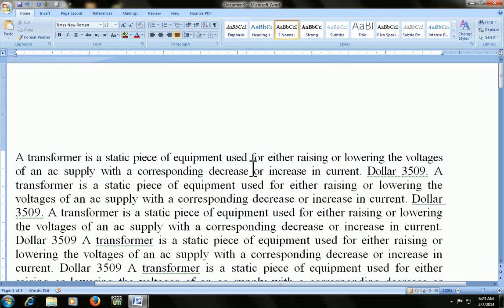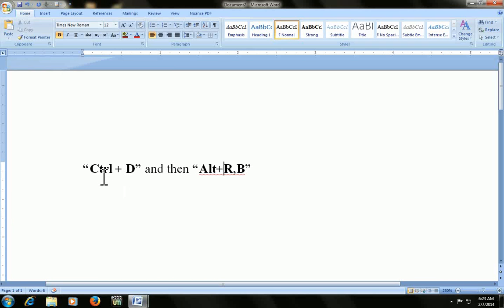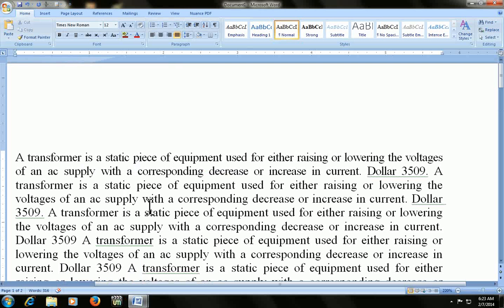Please don't forget the shortcut keys I showed before. Remember: first select the text and press Ctrl+D, then Alt+R+B. The dialog box will appear and there you can change your points as per your need.